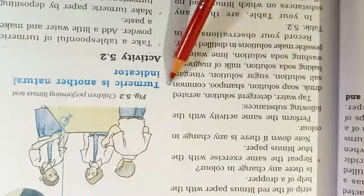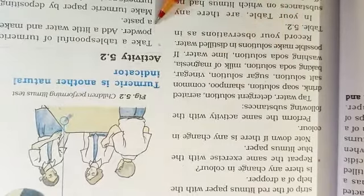Perform the same activity with the following substances. Yehi hum alag alag substances ke saath kar sakti hai jo yaha par aapko given hai jaise tap water, detergent solution, aerated drinks, ya milk of magnesia et cetera. To jiska jaisa bhi color aega, color ke basis pe aap bata sakti hai ki agar red color mein change hua hai blue to acid hai. Aur agar blue litmus paper red litmus paper mein convert hua hai, red color mein, then it is acid. Or red litmus paper changes to blue then it is a base.